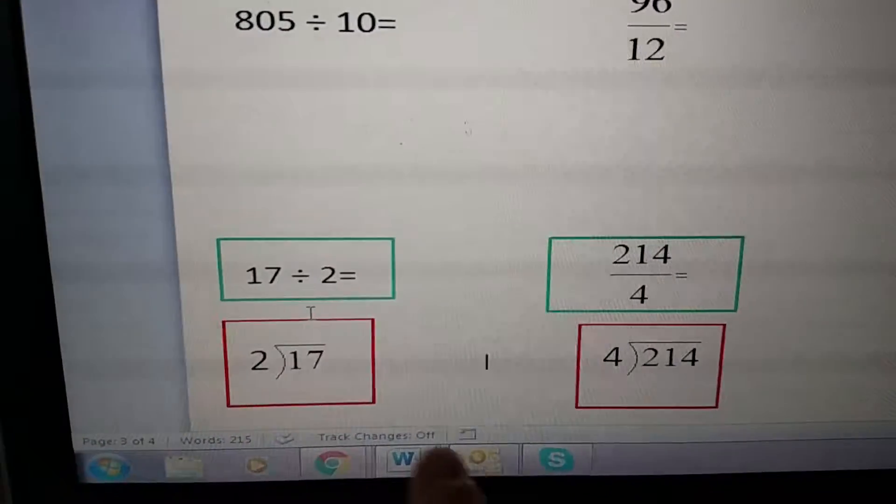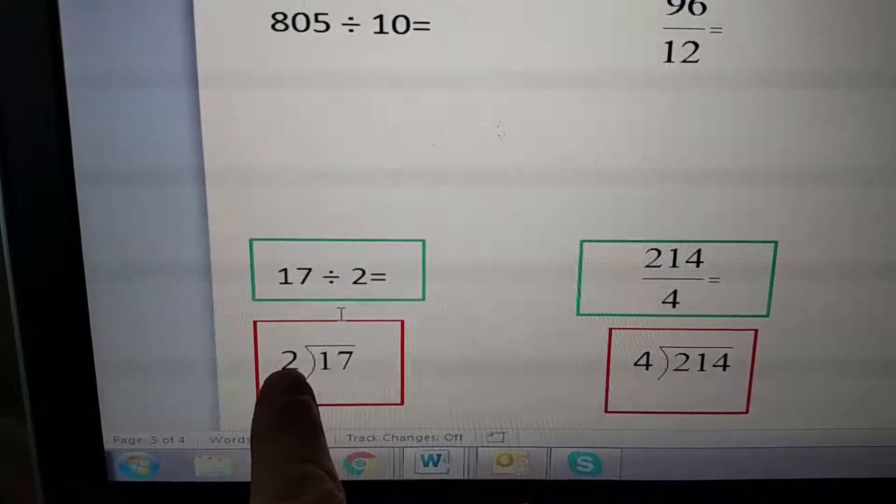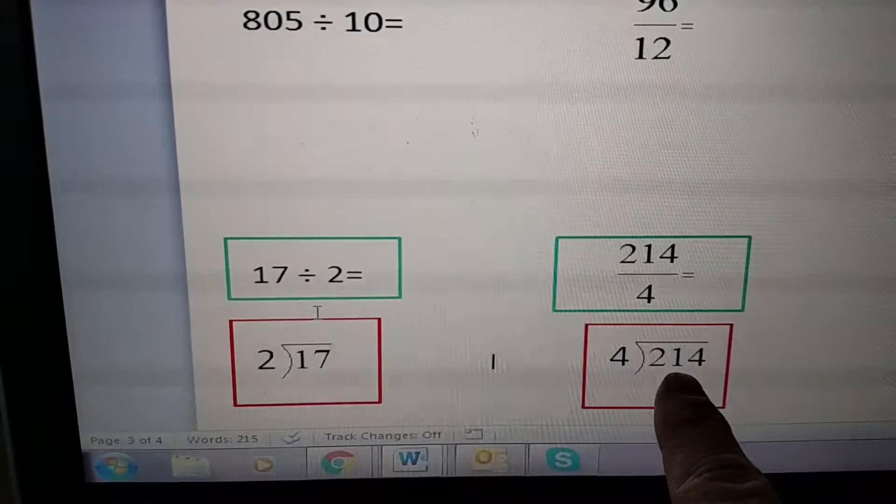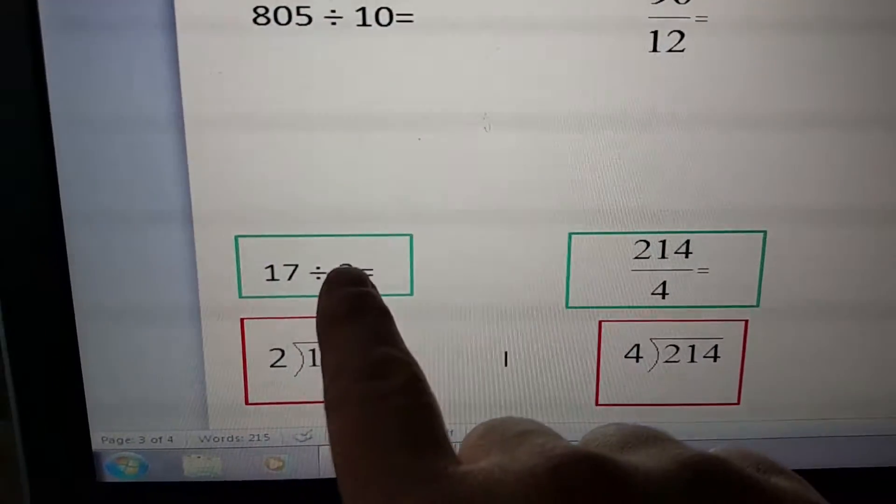Now, if I go to those problems in long division form, my divisor goes on the outside because we're trying to figure out how many of these twos are in 17. Here, I'm trying to figure out how many fours are in 214.